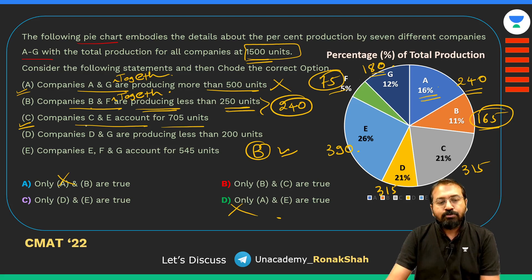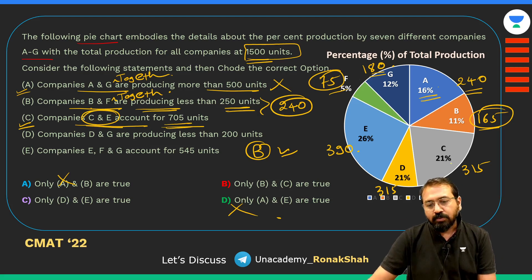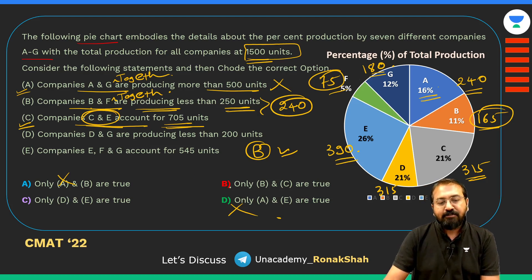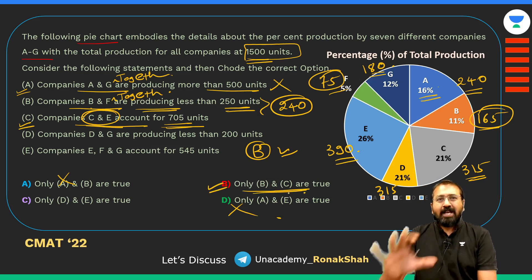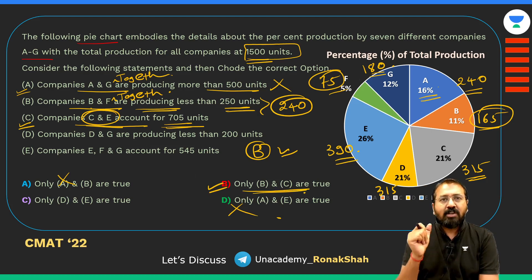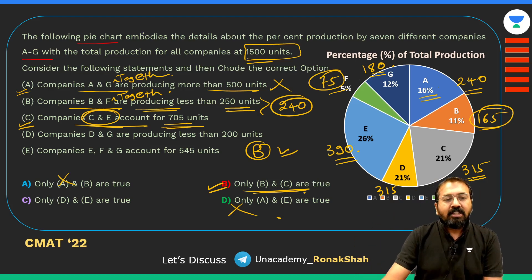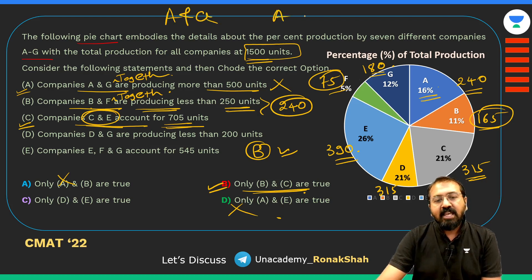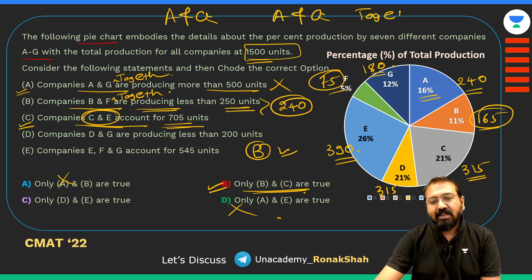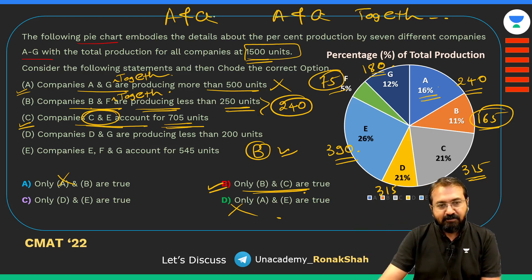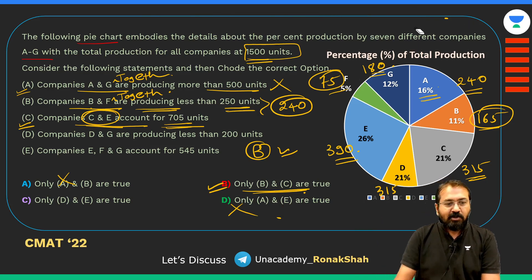Similarly, Statement C — C and E together account for 705: C is 315 and E is 390, giving 705. So only B and C are true. When you come across such questions, quickly figure out what they are trying to say. Many who aren't strong in English treat 'A and G' as the same as 'A and G together.' The answer is Option B.